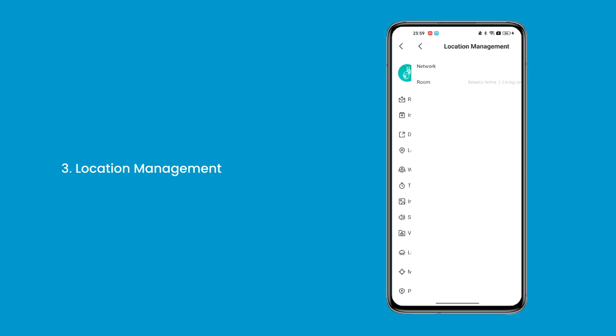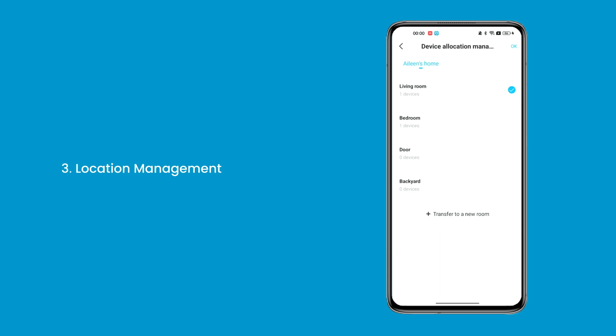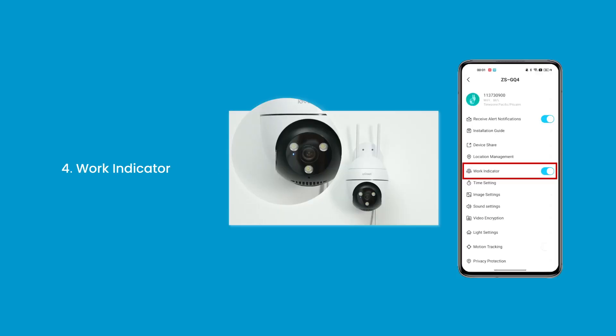3. Location Management — you can add or modify a family group for a device to manage the device on the home page. 4. Work Indicator — the indicator switch controls the indicator on the camera. After the switch is turned off, the indicator no longer prompts.